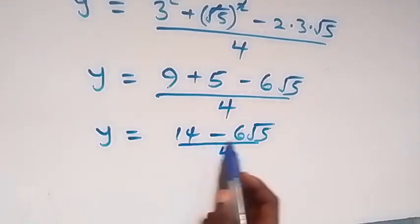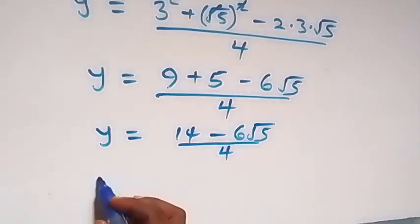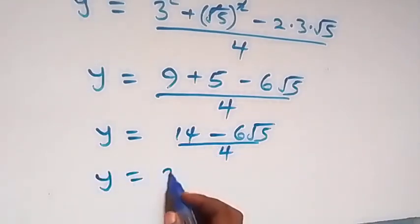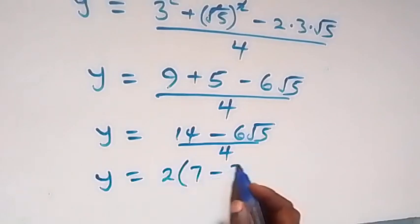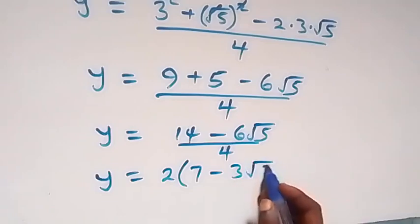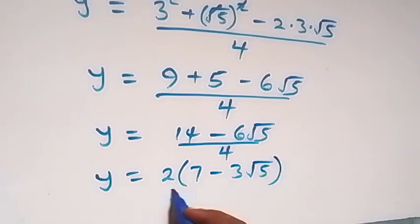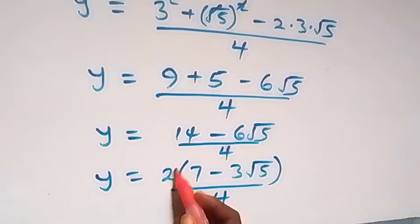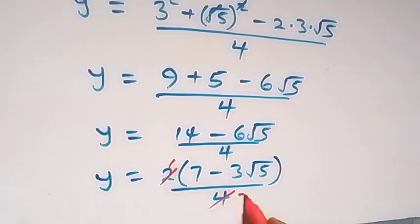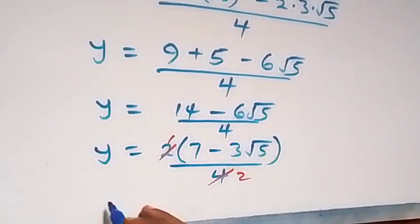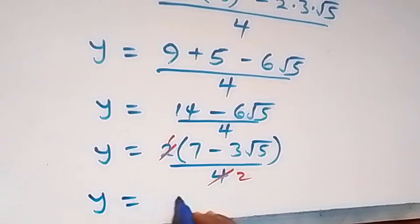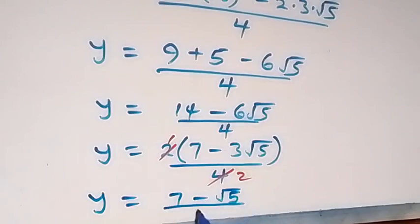From here, 2 is common so we factor 2 out: y equals to 2 times (7 minus 3 root 5) over 4. Cancelling the 2, we have y equals to 7 minus 3 root 5 over 2. So we have the solution to this given problem: y equals to 7 minus 3 root 5 over 2.